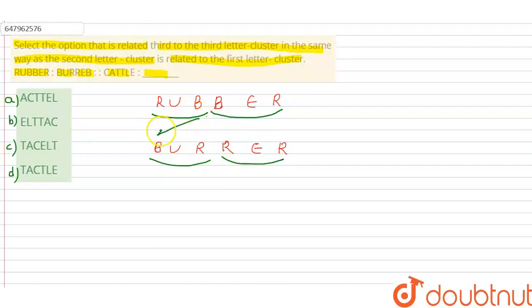Third letter is taken to the first position, second letter stays in the second position, and first letter is taken to the third position. Now we will apply this same pattern to Kettle.